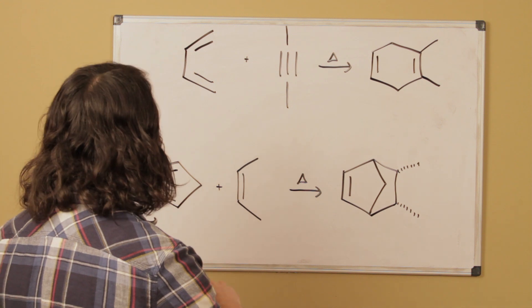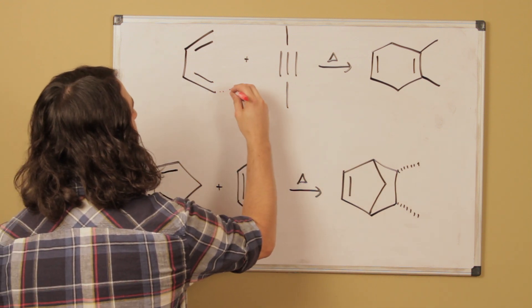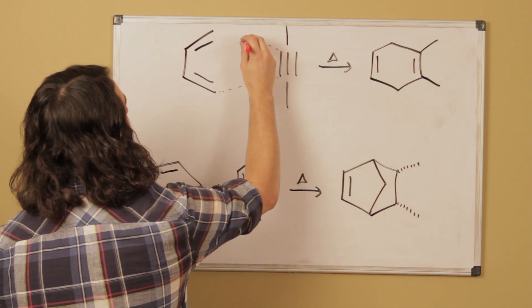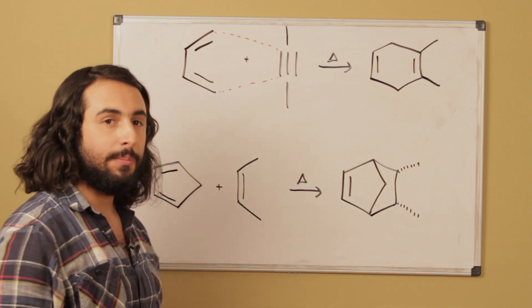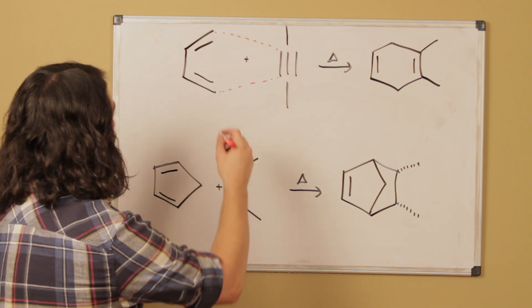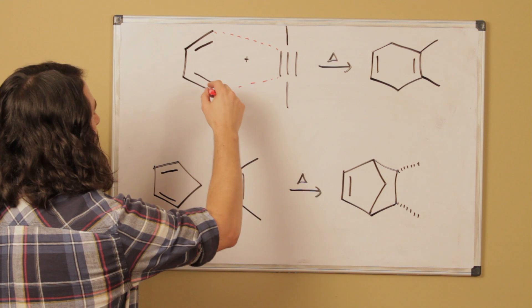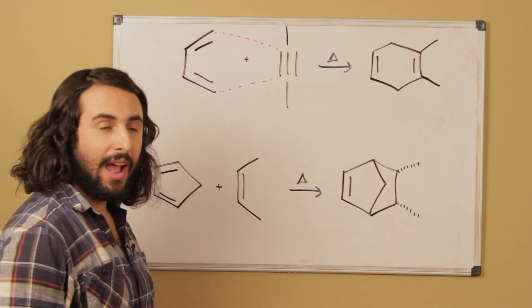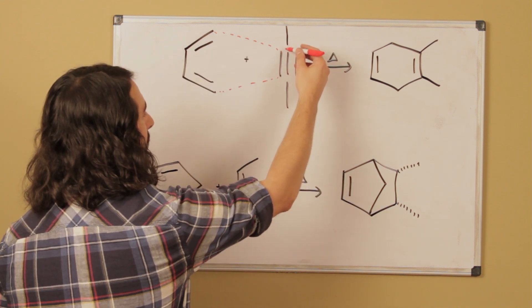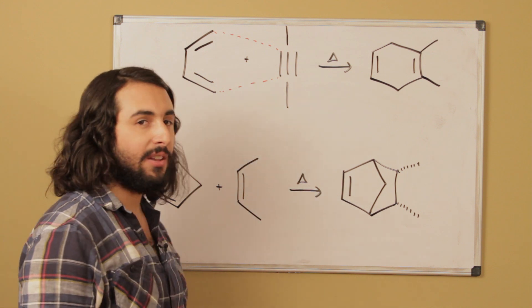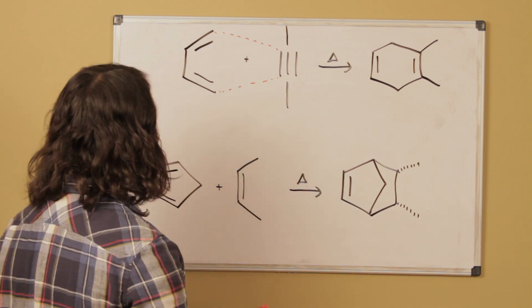So the easy part about the Diels-Alder is that the mechanism is always the same. We're always going to create a six-membered ring between the four carbons that are participating in the double bonds in the diene and then the two carbons that are participating in the pi bond in the dienophile that is involved in the reaction.